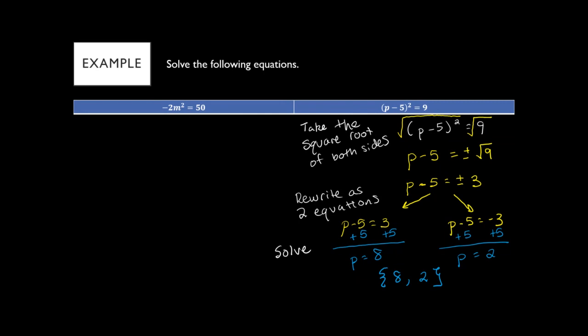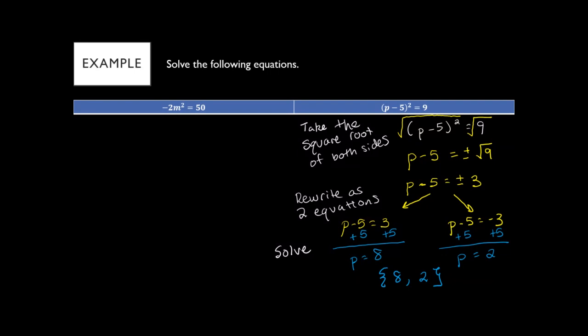Student question: do we always have to break it into two separate equations if the initial equation has parentheses? Yes — because instead of just the variable by itself we have something added or subtracted to that variable, which forces us to use two separate equations. If you have something in parentheses and it's not just the letter, always write the two separate equations.